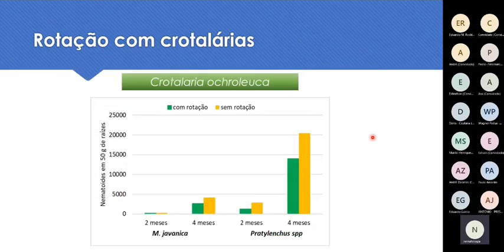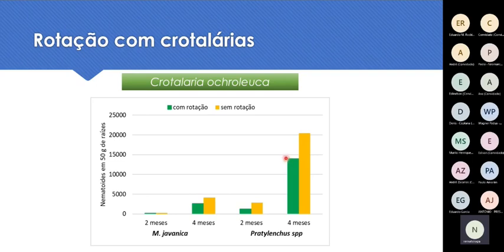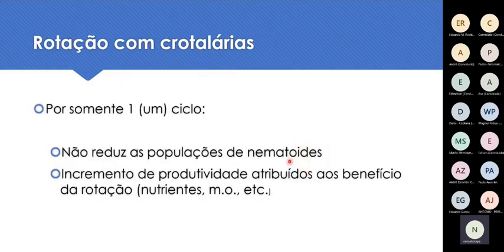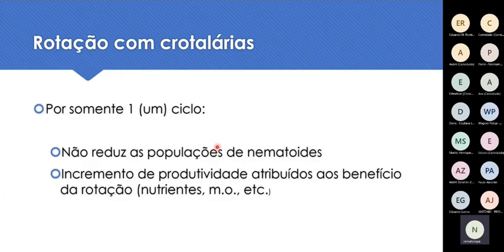Esse ensaio foi feito com Crotalaria juncea e este com ochroleuca. Com a ochroleuca há um resultado um pouco diferente: onde fiz a rotação tenho um pouco menos de nematóides do que onde não fiz. Ao que parece, a Crotalaria ochroleuca tem um efeito nematicida um pouquinho maior que a juncea, que não tem nada. Mas mesmo assim é um efeito pequeno, pois as populações de nematóides, mesmo onde fiz a rotação, continuam muito elevadas. A crotalária juncea não reduz nada e a ochroleuca reduz um pouquinho, mas não o suficiente para abrir mão do nematicida.